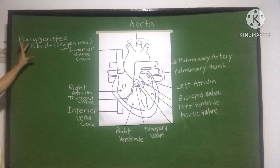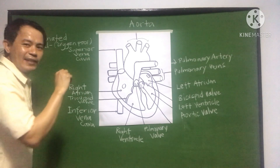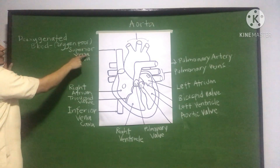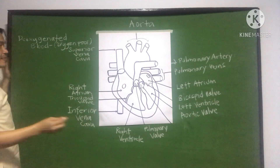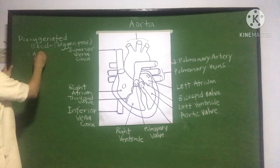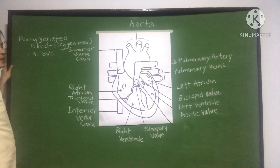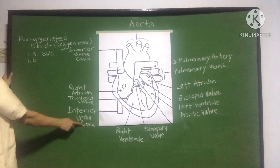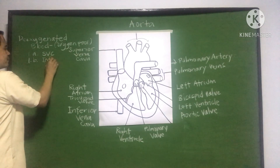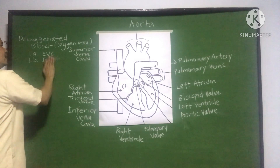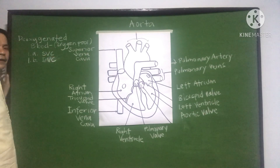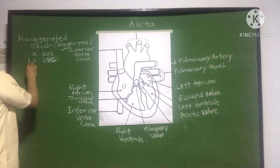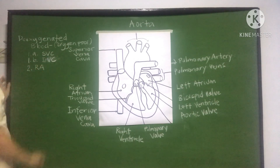Let me number the parts. Number 1A: superior vena cava. Number 1B: inferior vena cava — they enter at the same time. Number 2: they flow into the right atrium.